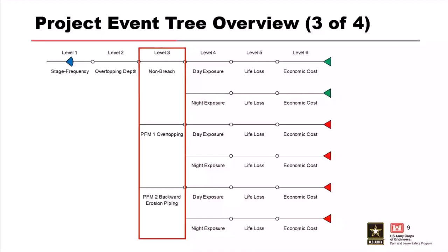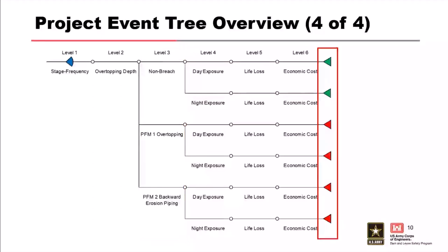The final feature of the tree is end nodes. End nodes are where the tree ends and they represent failure or breach—the red triangles—or non-failure and non-breach—the green triangles.